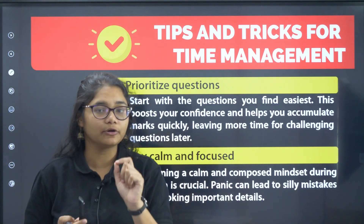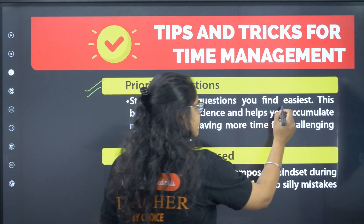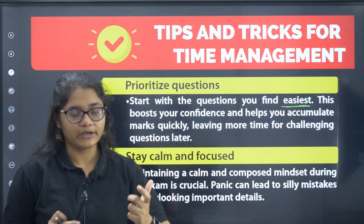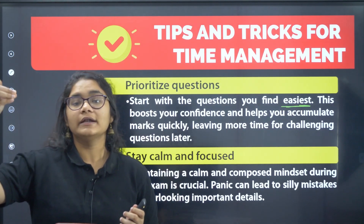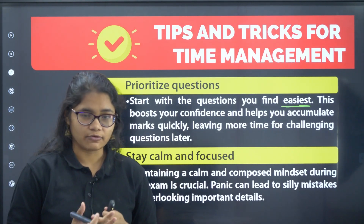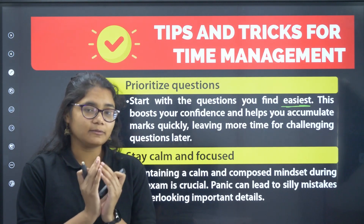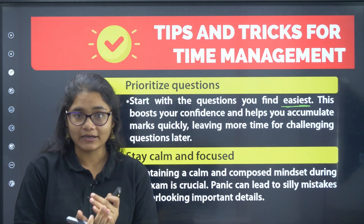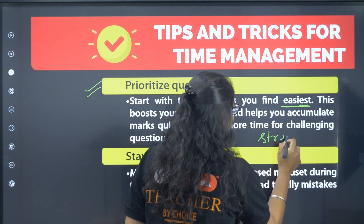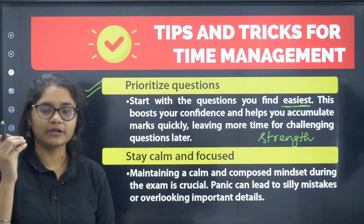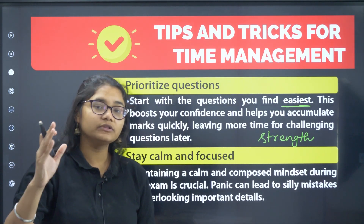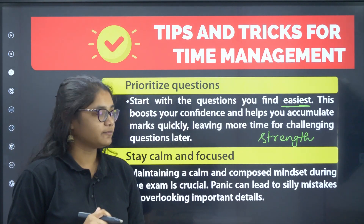The fifth tip is to prioritize questions — always start with the easiest questions. When you start with easy questions, you feel confident, your mindset becomes positive, and you can tackle difficult questions better. If you start with uncertain questions and the first 3-4 go wrong, your mindset becomes very negative and you may not even answer easy questions correctly. Always start with your strength questions — that gives you a positive mindset and keeps you calm for difficult questions.